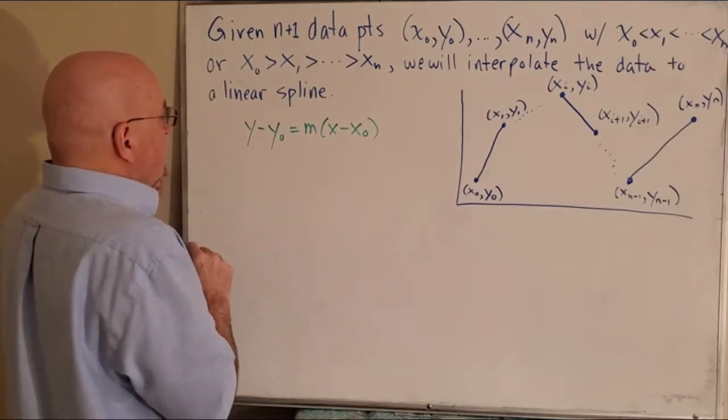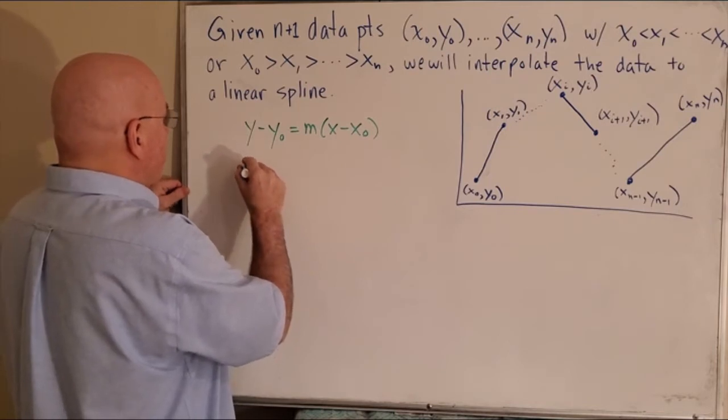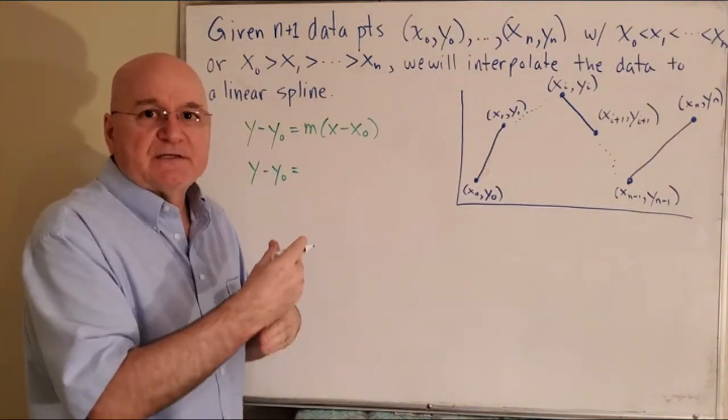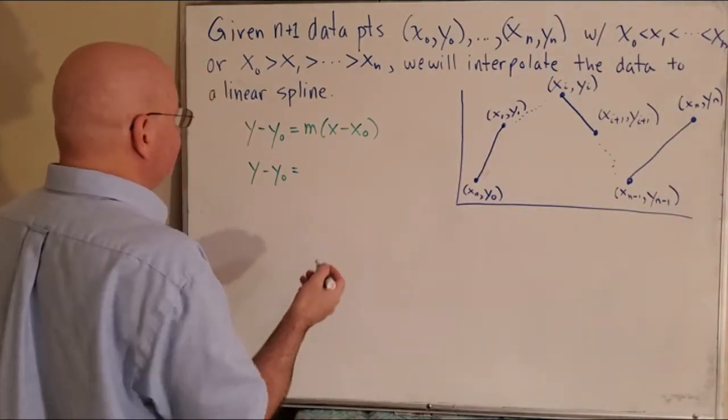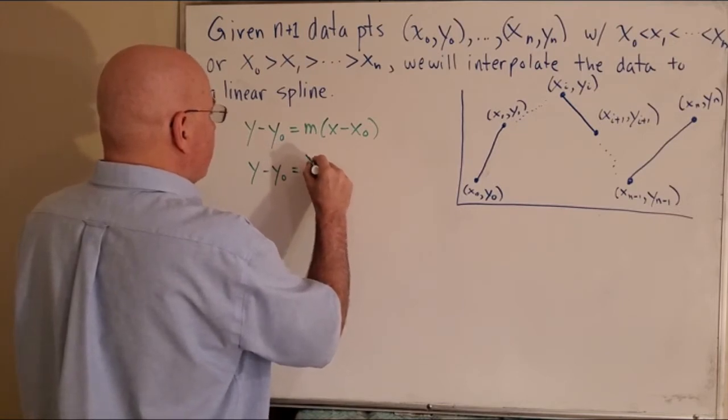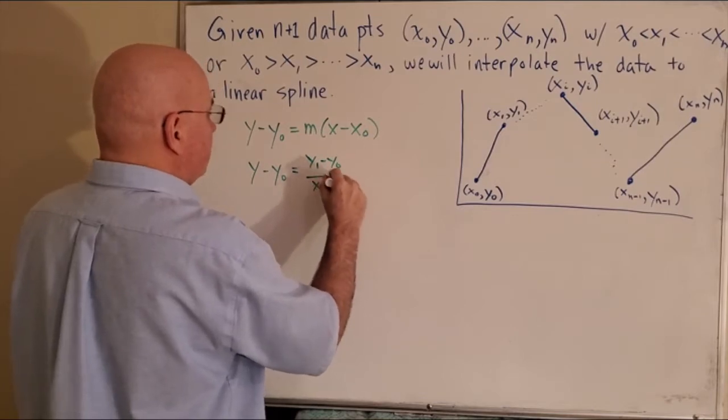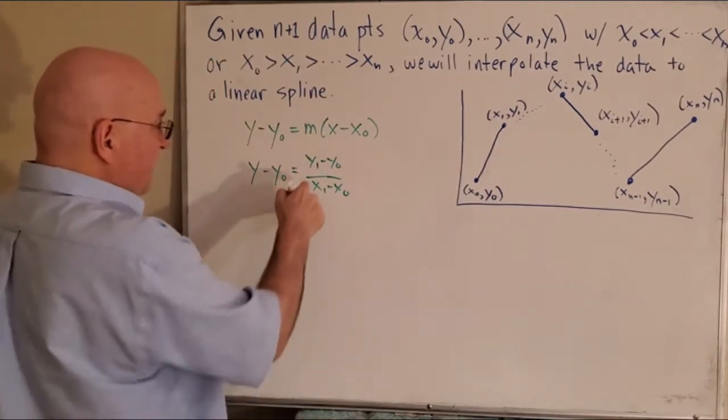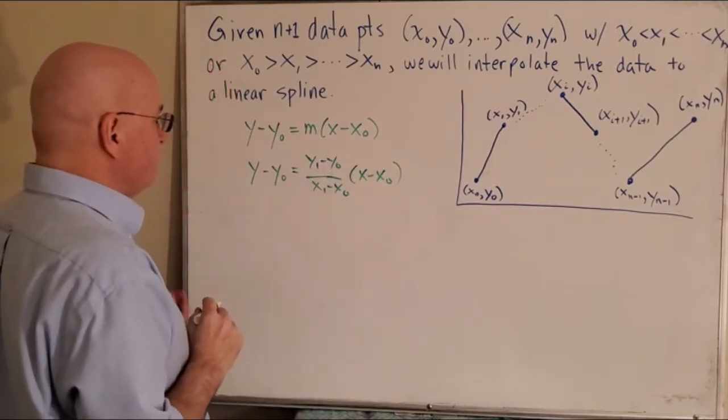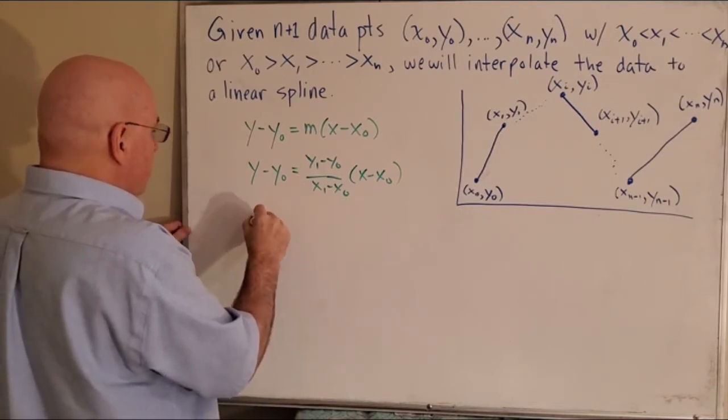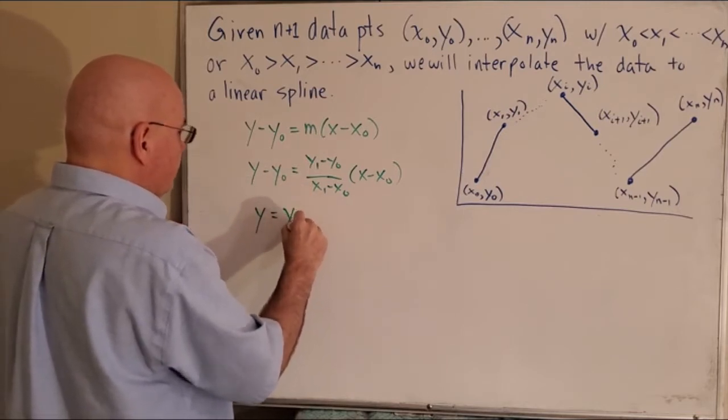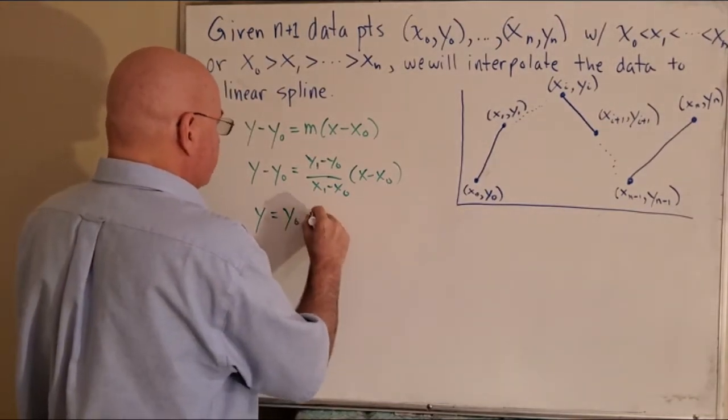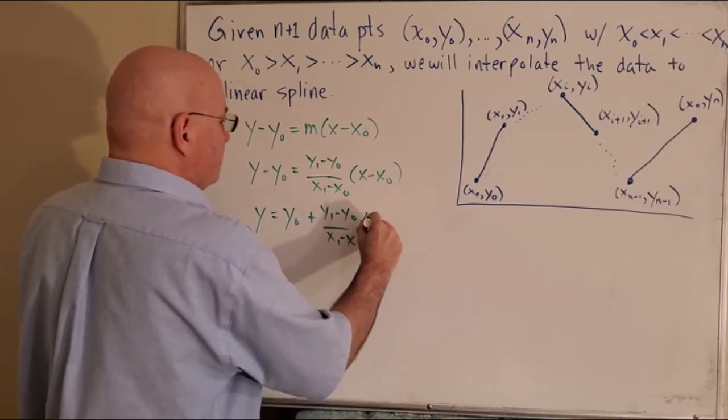So let's now, let's say we have y minus y0 equals, well, the slope between two consecutive points is just rise over run. So I call that y1 minus y0 over x1 minus x0. Let's go specifically for this line right here. That's the slope of that line. Well, that's the slope m times x minus x0. So now what I'm going to do is say y equals add y0 to both sides. And I get y0 plus m or plus y1 minus y0 over x1 minus x0 times x minus x0.